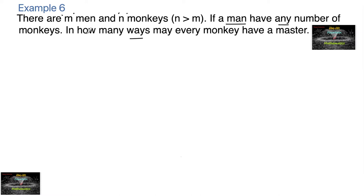So here in this example, there are m number of men. Here n is greater than m, meaning the number of monkeys are more than the number of men. If a man has any number of monkeys, in how many ways may every monkey have a master?